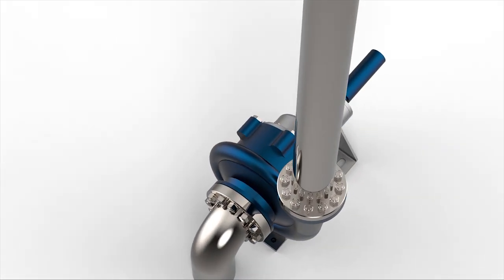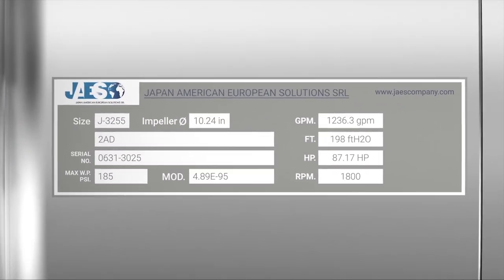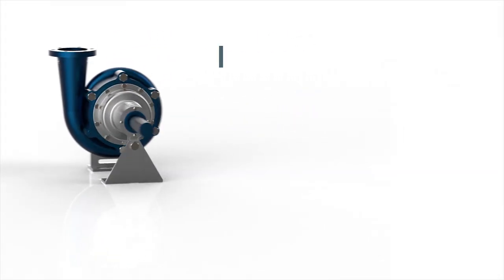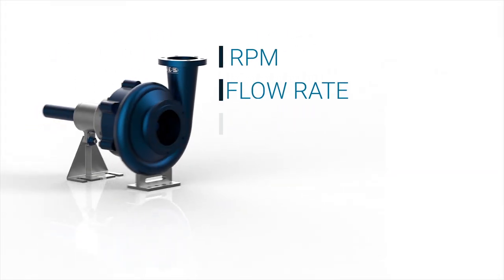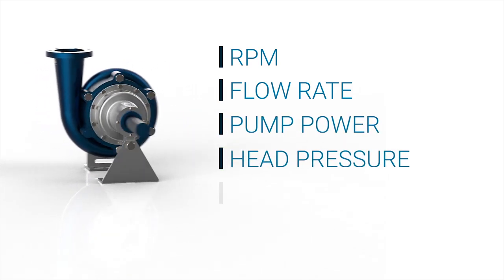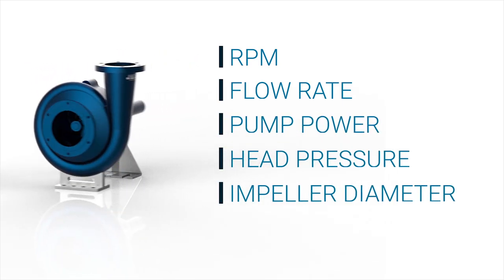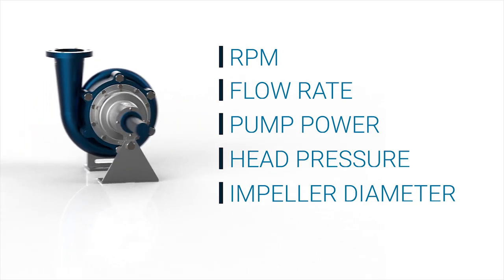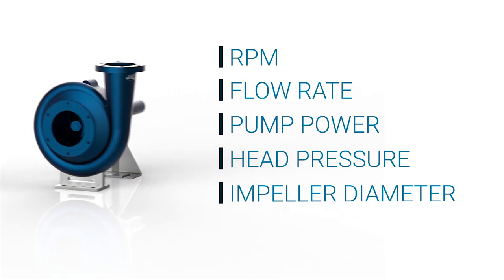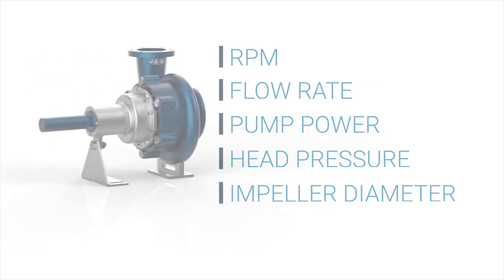In this video we're going to learn how to read centrifugal pump nameplate data, as well as how to apply some important formulas to calculate the RPM, the flow rate, the pump power, the head pressure, and the impeller diameter. We will also see what happens if we try to modify some of these parameters and which formulas we have to use in order to determine what will be the new performance of our pump.